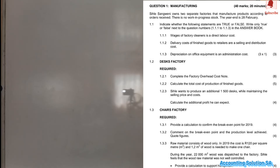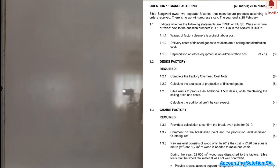Question 1.1.2: deliver cost of finished goods to retailers — is it a selling and distribution cost? It's true. But be careful: if they ask whether delivery cost of raw materials is a selling and distribution cost, that would be false. This delivery cost is to deliver to customers, so it falls under selling.